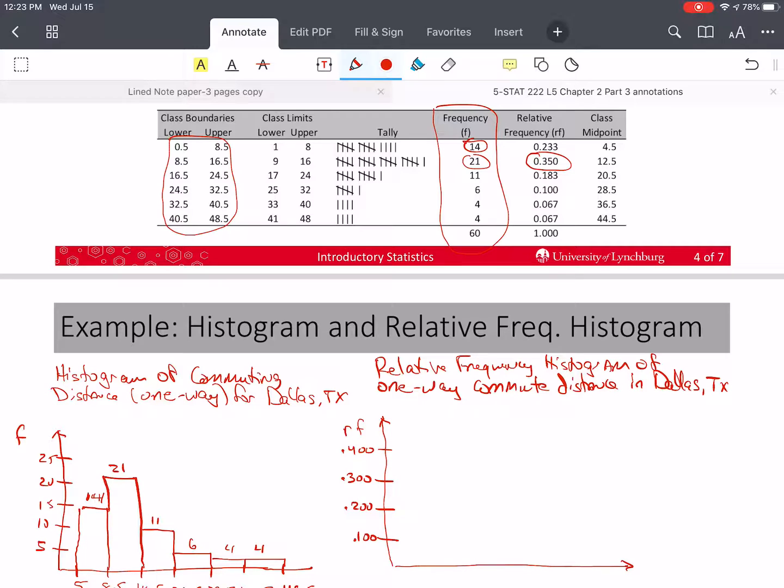And so now I'm going to do my first value, which is 0.233. And, oh, before I do that, I need to make 2, 3, 4, 5, 6.